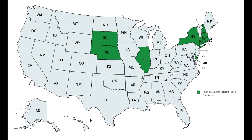This map highlights the states where the finance sector is the largest part of the economy — so banking, insurance, and stock market kind of stuff. The finance sector is not growing as much, and a lot of it is being automated. Some of it is basically just entering a higher number into the calculator, so to speak. Of the 11 states that are losing population, four are states where the finance sector is the largest part of the economy.